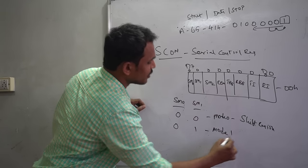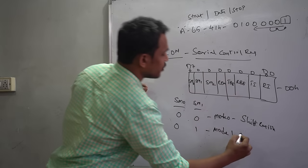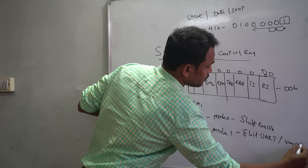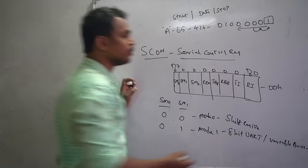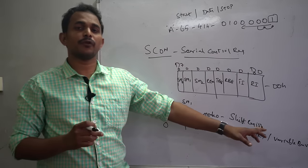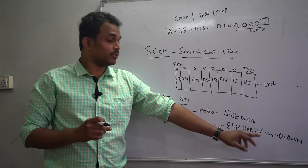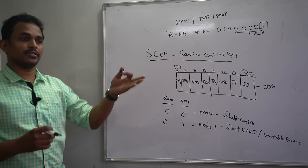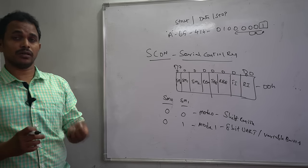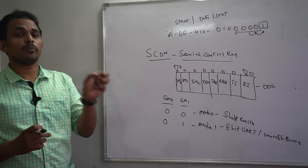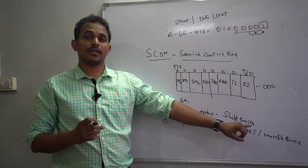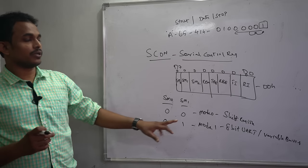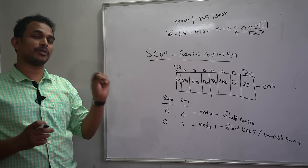When SM0 and SM1 are set to 01, it selects Mode 1. In Mode 1, no shifting process is needed — data is placed directly between the start and stop bits as 8-bit data, and it supports a variable baud rate. Baud rate is defined as the number of bits transmitted or received per second, and the microcontroller supports different speeds, similar to internet speeds expressed in kbps or Mbps.